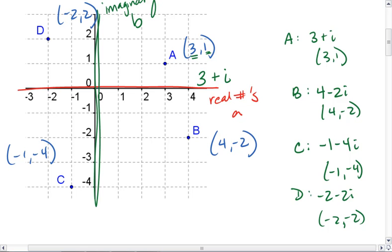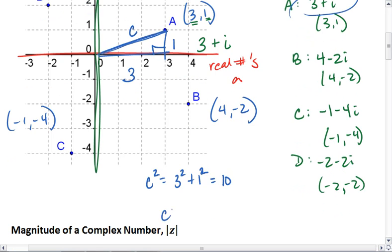For example, for the complex number 3 plus i, we can see that that puts point a at 3, 1. So our right triangle has a leg of 3 and a leg of 1. Meaning, to solve for the distance, we take c squared equals 3 squared plus 1 squared, which equals 10. So c equals the square root of 10. That is the magnitude for point a.